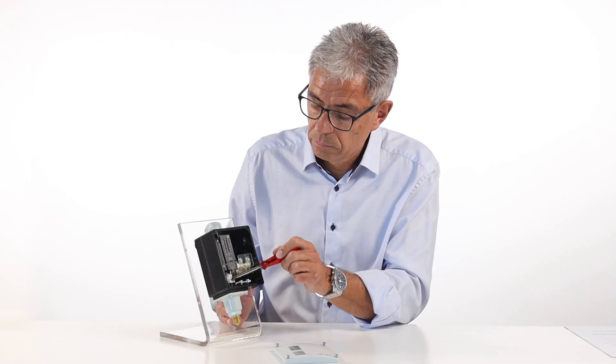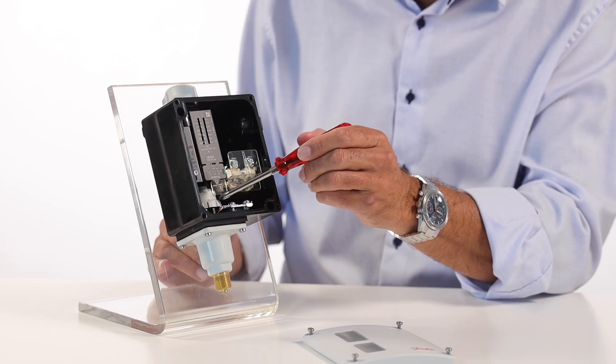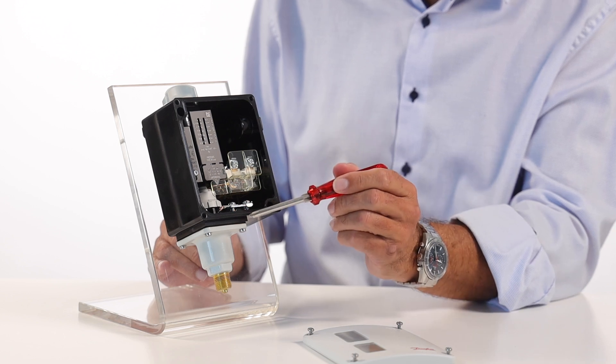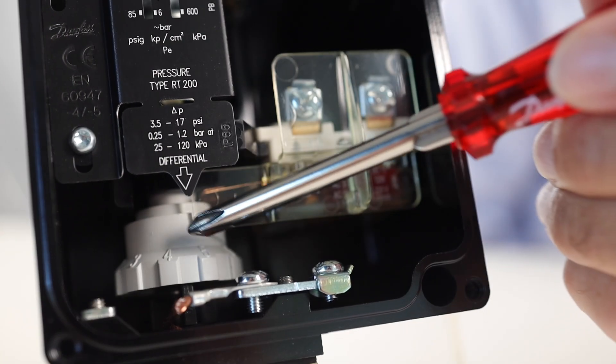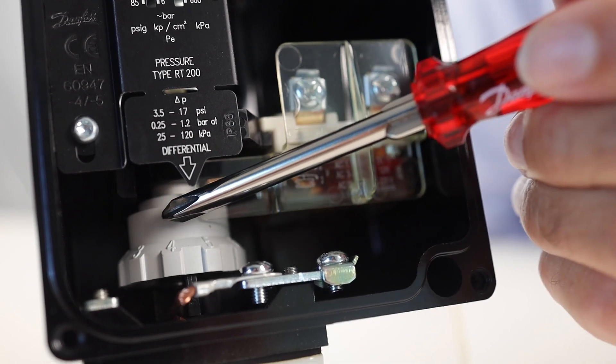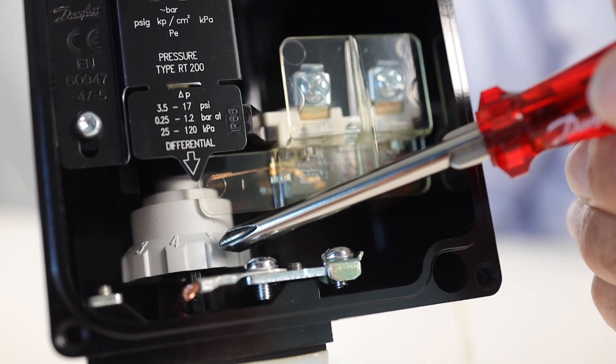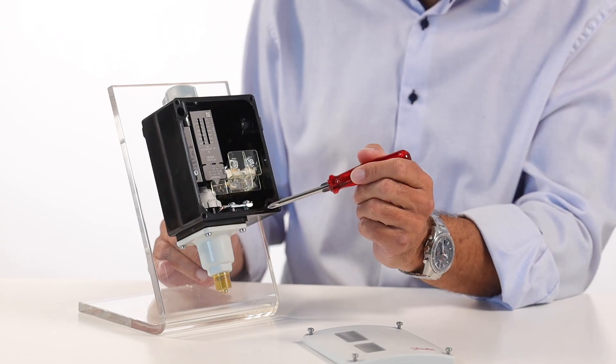Inside, you can also find the differential setting nut where you can set the differential. The setting nut scale goes from 1 to 10. In the instructions, you will find the table where you can read which differential level corresponds to the setting levels.